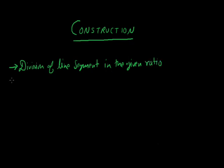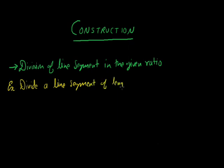Let's take an example. Divide a line segment of length 8 cm in the ratio 3 to 4. We need to divide a line segment of length 8 cm in ratio 3 to 4. How can we divide? Let's see.